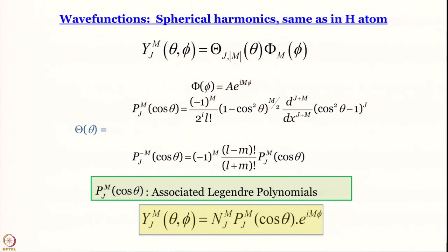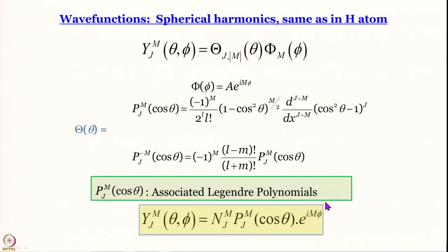So if J equals 3, for example, you can have M equal to 0, ±1, ±2, ±3 — giving 2J+1 values of M. We will come back to this when we discuss the hydrogen atom. The theta-dependent part is a constant multiplied by an associated Legendre polynomial in cosθ, and the phi-dependent part is an imaginary exponential factor.